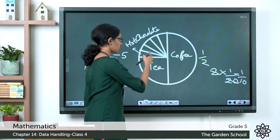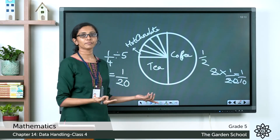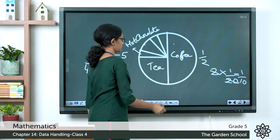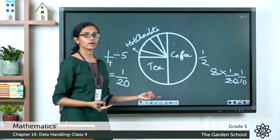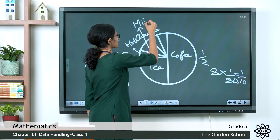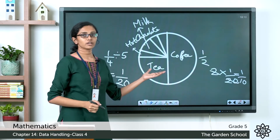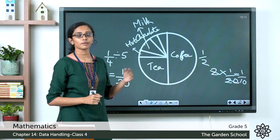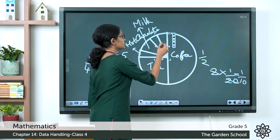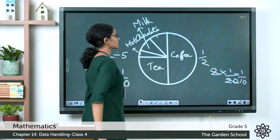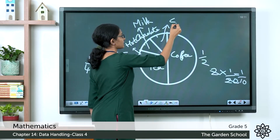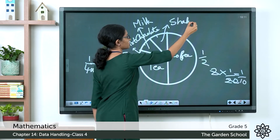Erase the line between two 1/20 sectors to merge them into one 1/10 sector for milk. The remaining two 1/20 sectors together form the 1/10 sector for shake.